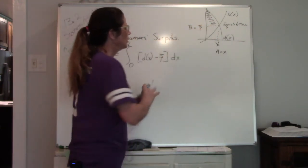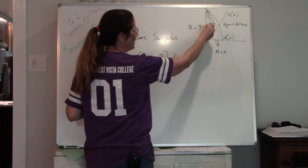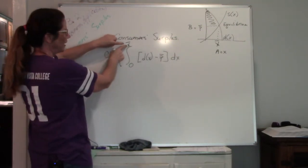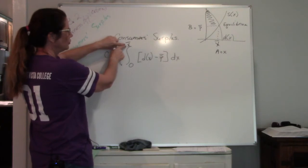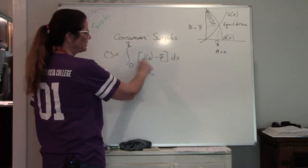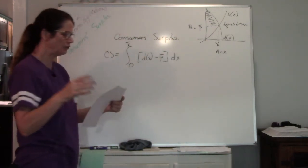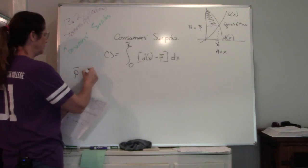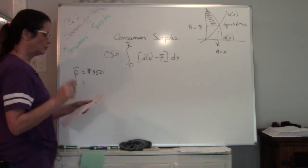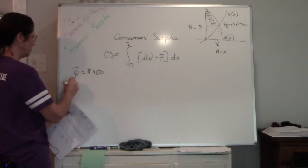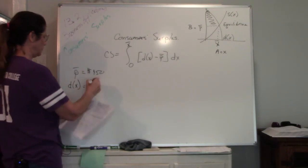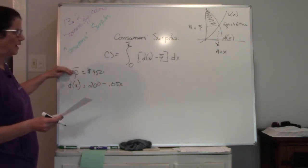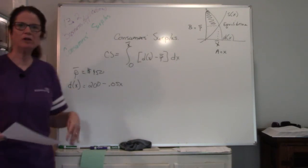For consumer surplus, we're going to use the demand equation minus the market price. Here is the formula: you take your X-bar value — which you'll have to find — and the P-bar value is given to you. Here's the example question: find the consumer surplus at a price level of P-bar equals $150, given the price demand equation P equals 200 minus 0.05X.